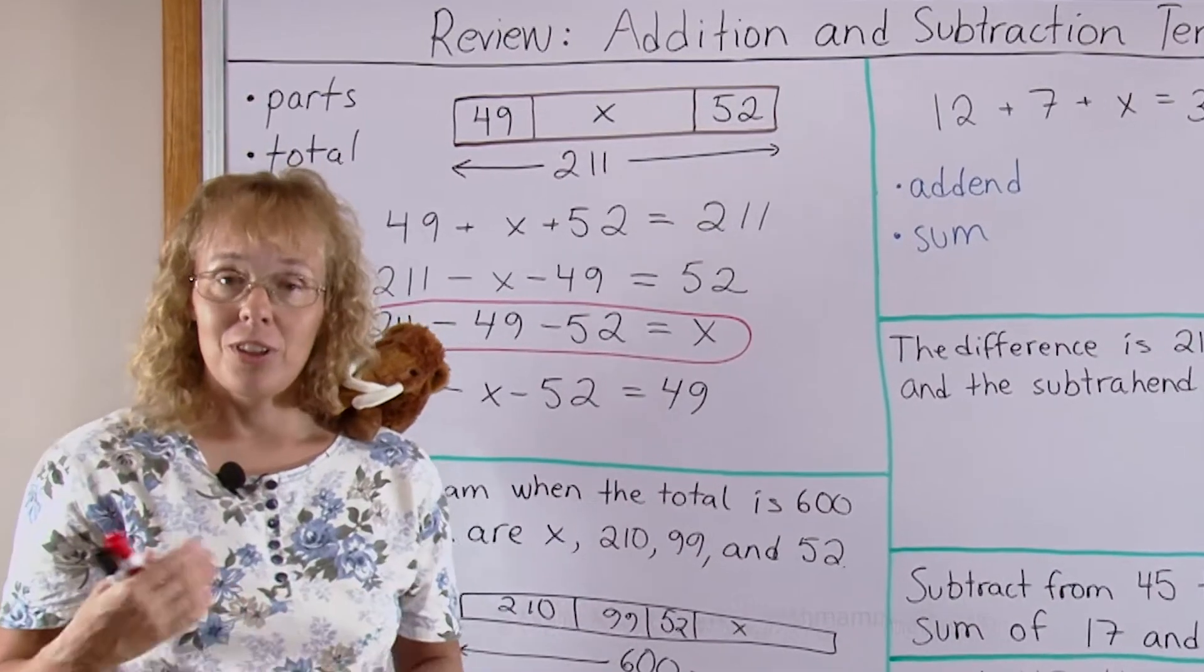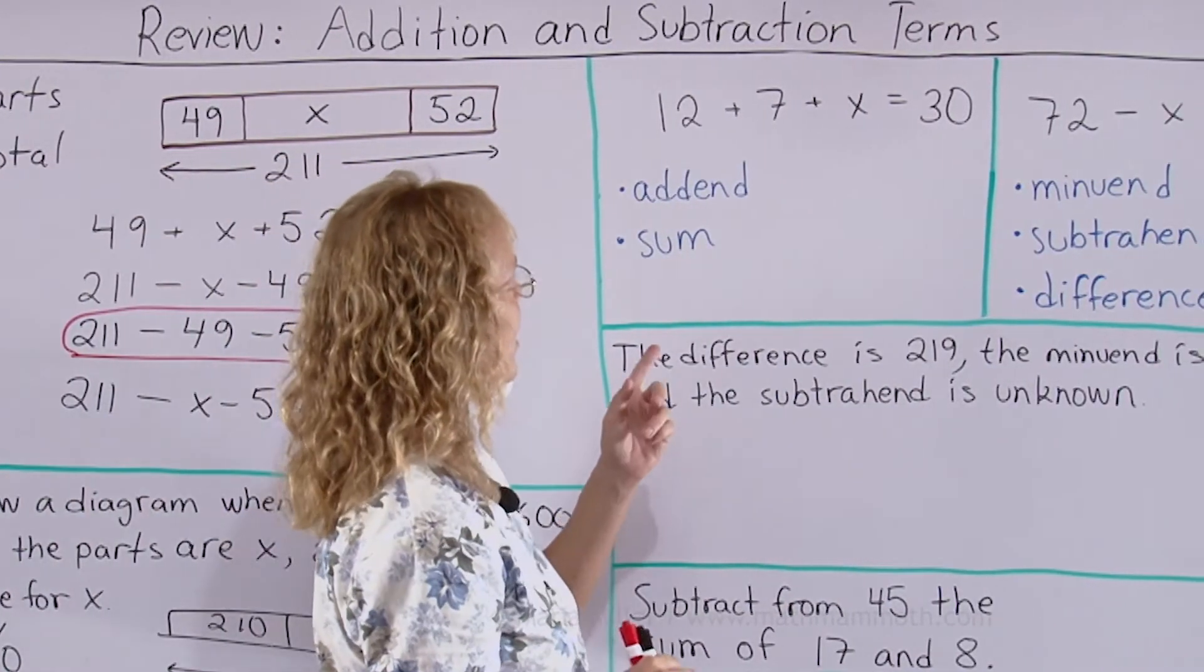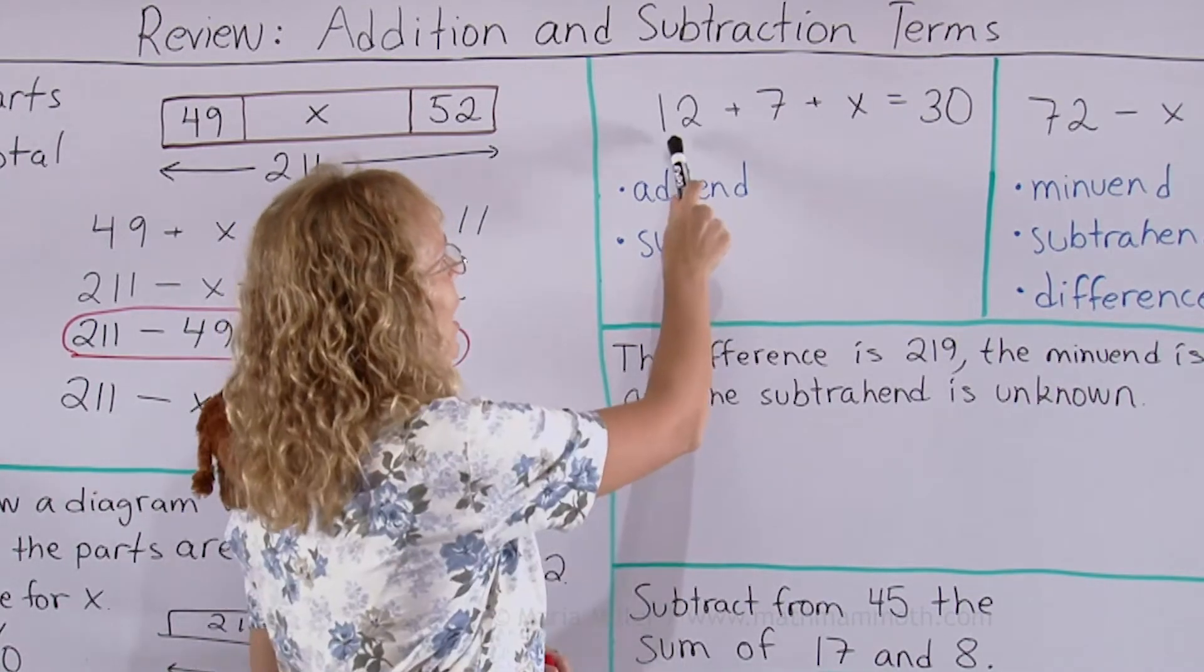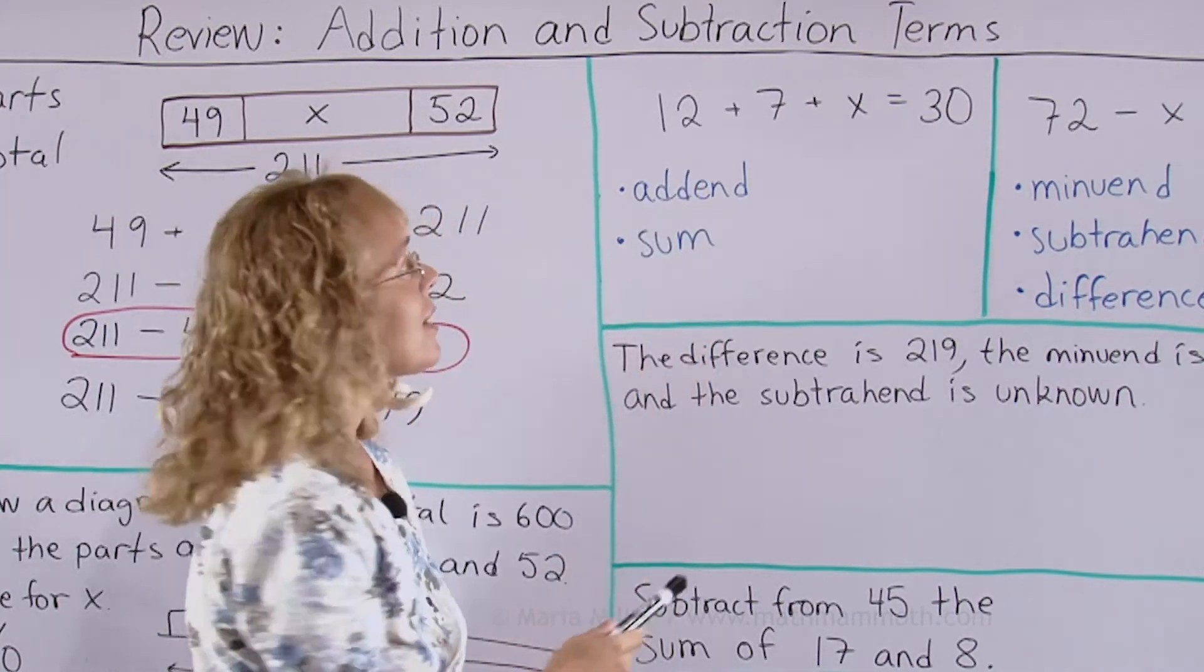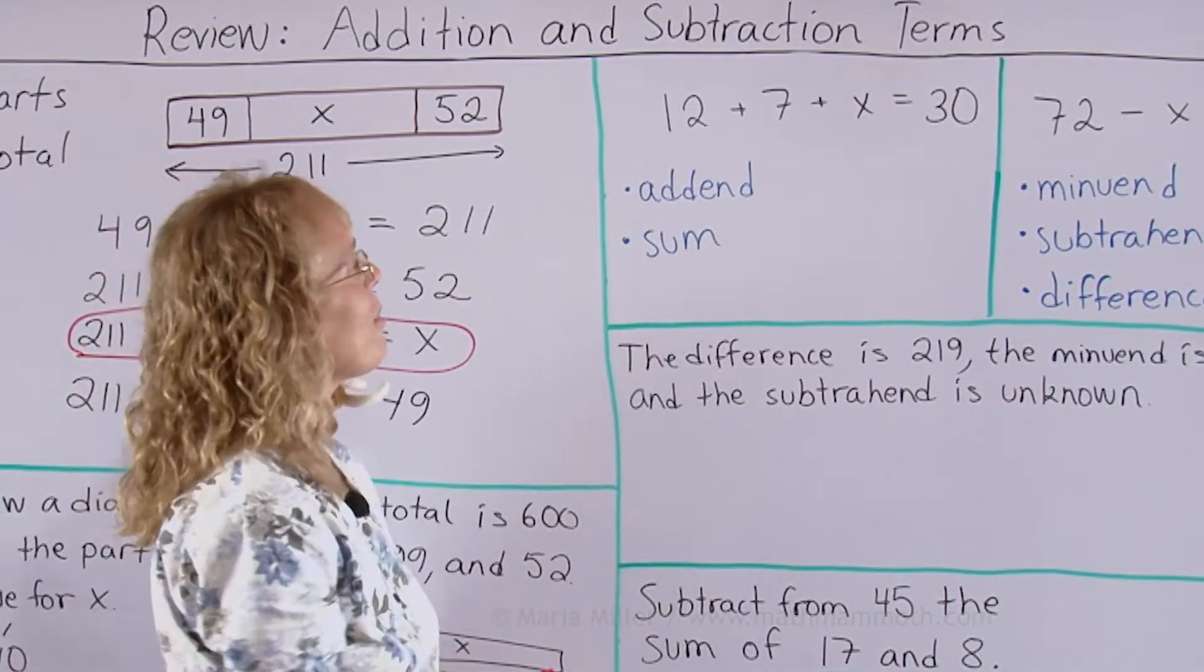Now let's go on and review the terminology for addition and subtraction. In addition we have addend and sum, the two words to remember. An addend is a number you're adding, like 12 is one of the addends, 7 is another and x is another. There's three addends in this equation here.